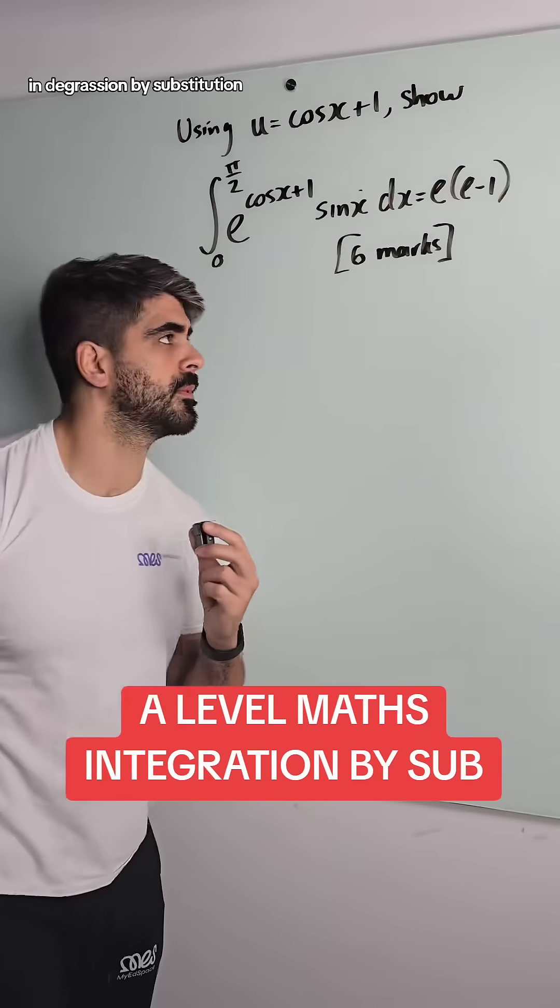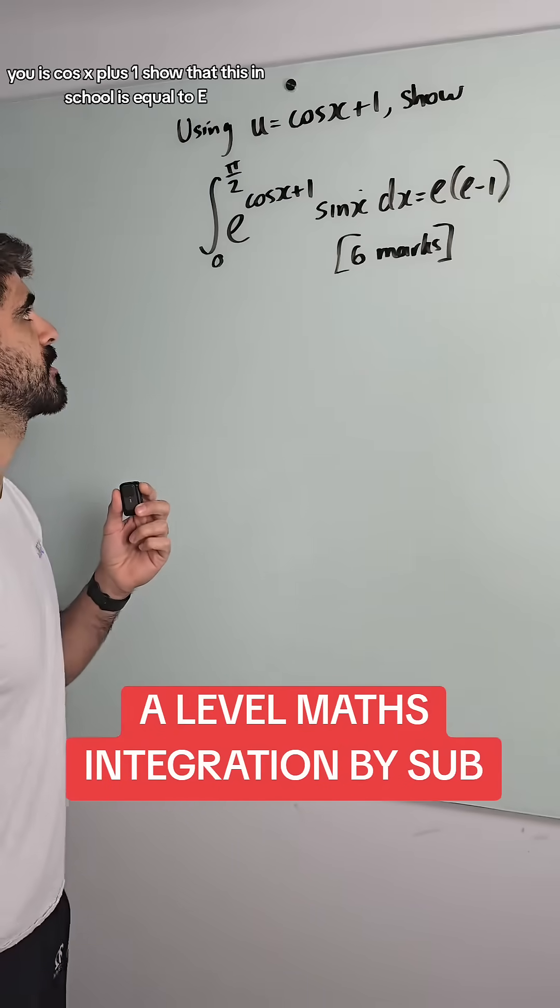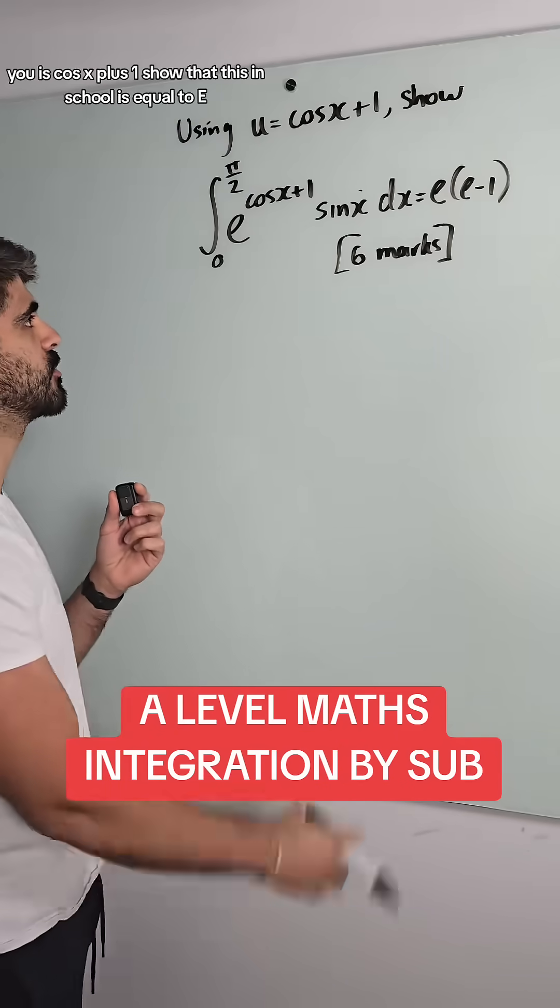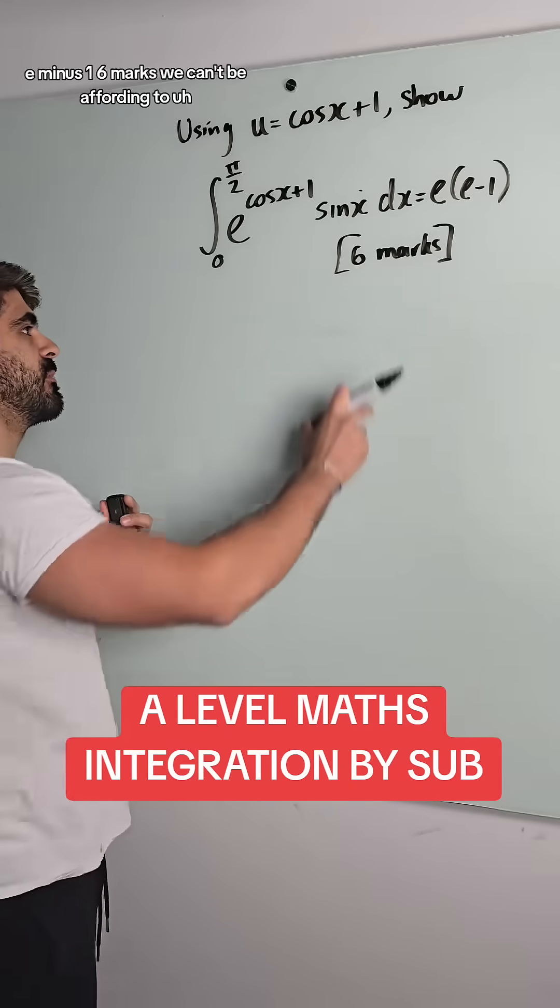Integration by substitution. U is cos x plus 1, show that this integral is equal to e(e-1). Six marks.